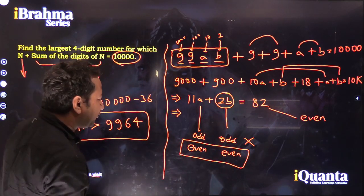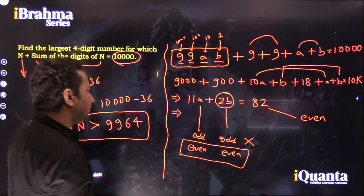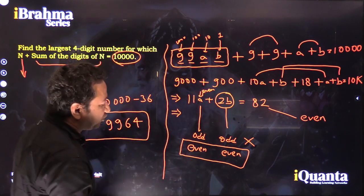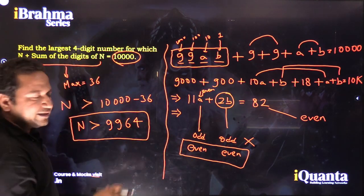So 2B is of course even, and now we have to make 11A even. 11 is odd, which means A has to be even. So that is what we have to do here.